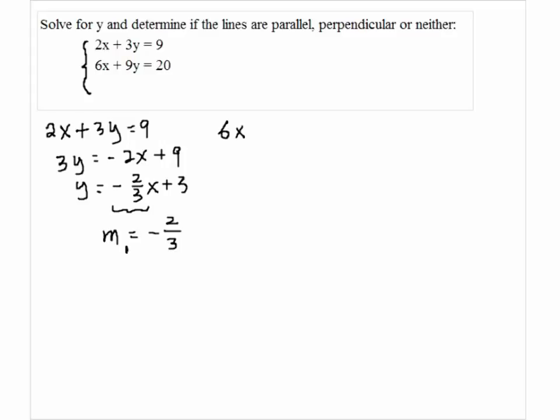Now, let's look at the second equation, 6x plus 9y equals 20. So 9y equals negative 6x plus 20. By dividing both sides by 9, we get y equals negative 2 thirds x plus 20 over 9.